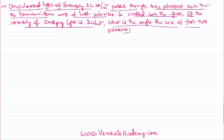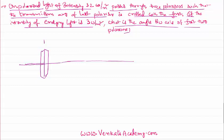That's the problem. Let me try to draw what has been given. This is the baseline, this is the first polarizer experiencing unpolarized light having both vertical and horizontal vibrations, and its intensity is given as 32 watt per meter square.